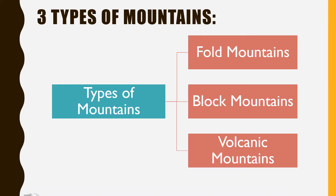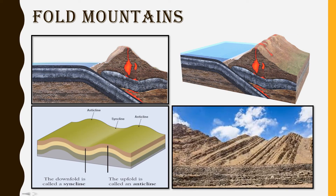There are three types of mountains: fold mountains, block mountains and volcanic mountains. Fold mountains are the most common type of mountain. The world's largest mountain ranges are fold mountains. These ranges were formed over millions of years. Fold mountains are formed when two plates collide head-on and their edges crumble, much the same way as a piece of paper folds when pushed together.